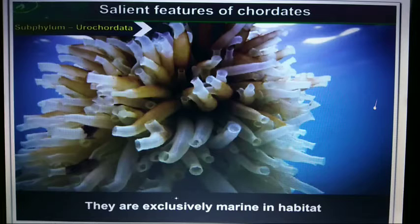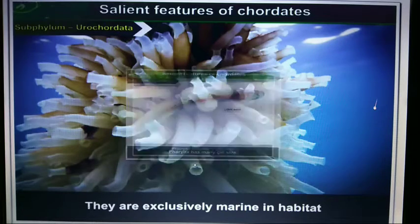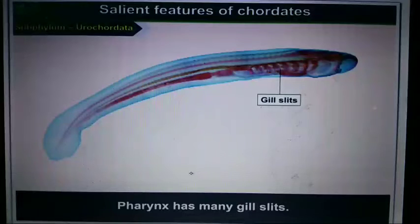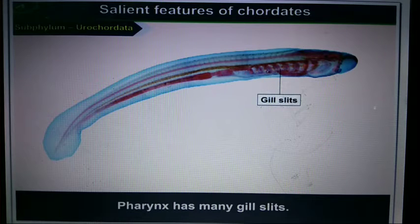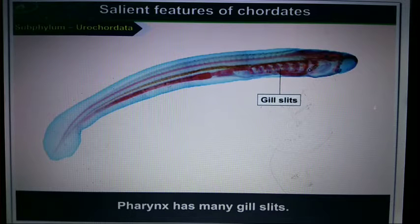Urochordata are exclusively marine in habitat. Their pharynx, or neck region, consists of a number of gill slits.